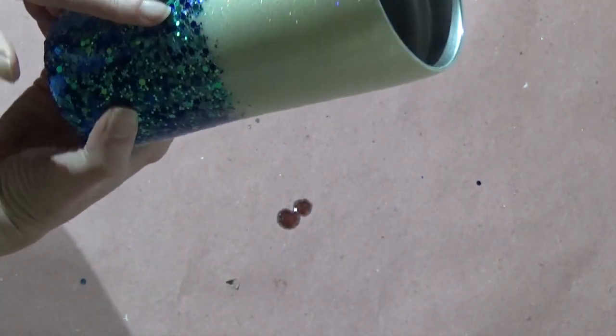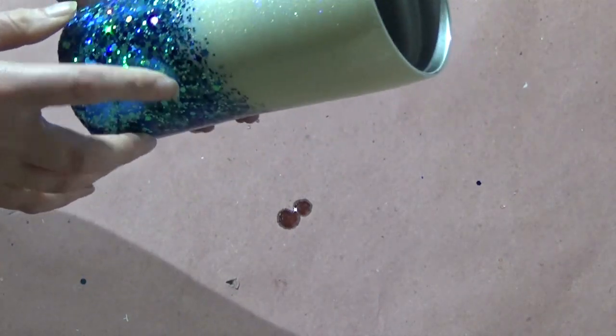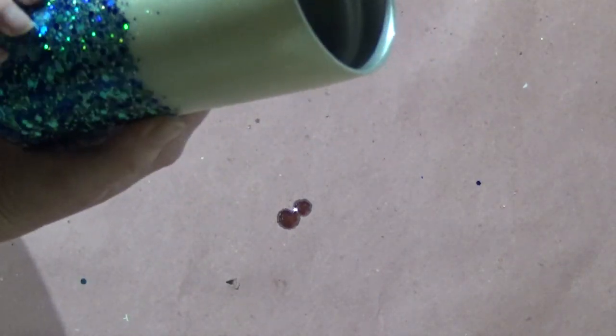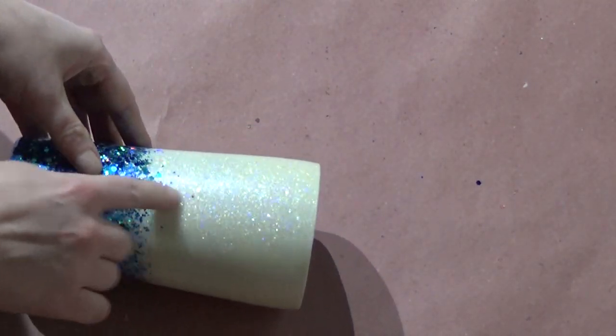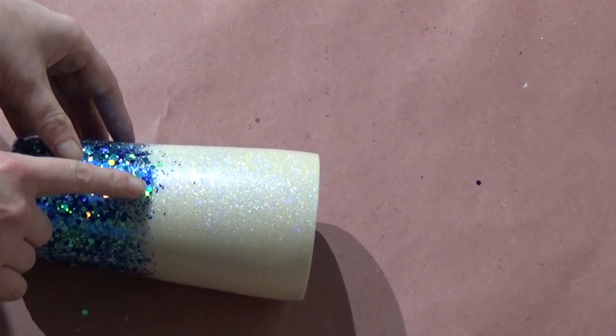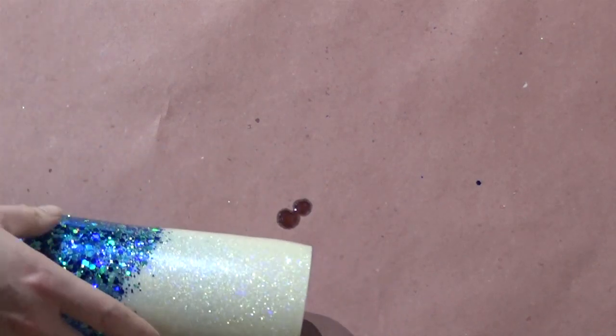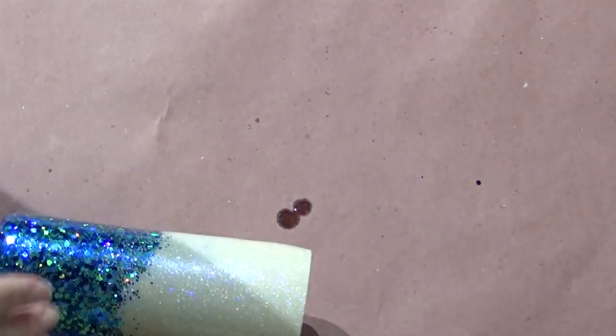So I want to kind of look at that, take that into consideration and figure out where I want to place. I want to place my wording on the side where the glitter is a little bit lower. And a lot of times to kind of help measure this, I put my lid on.